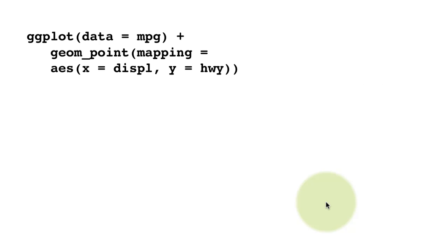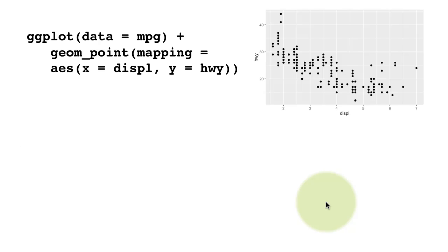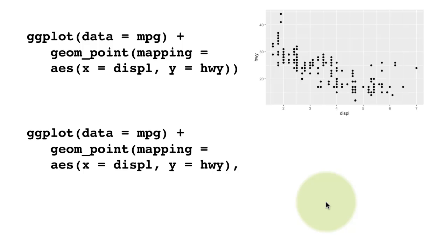You can do this thing called position equals jitter. So this is our original plot with overplotting. And if you do this option of position equals jitter, jittering means the thing is shaking a little bit. So what R is going to do, ggplot is going to do, is to add a little bit random, a little bit of a random value to both the x and the y coordinates.